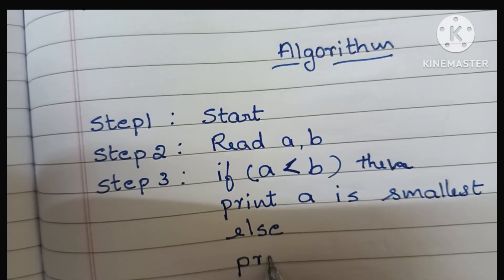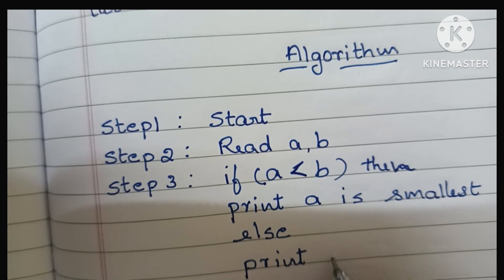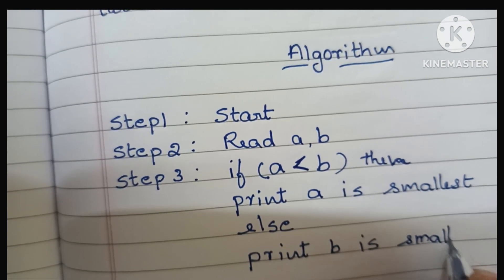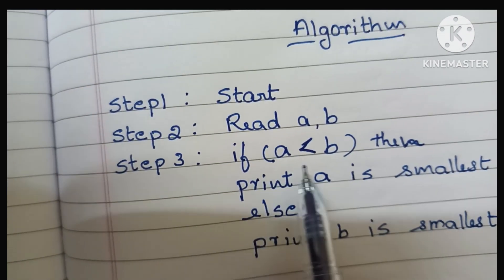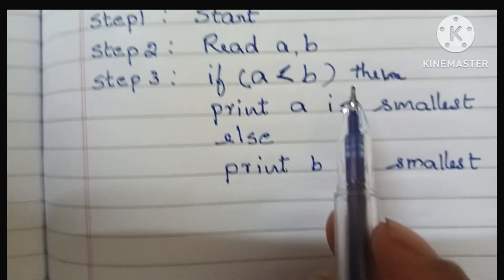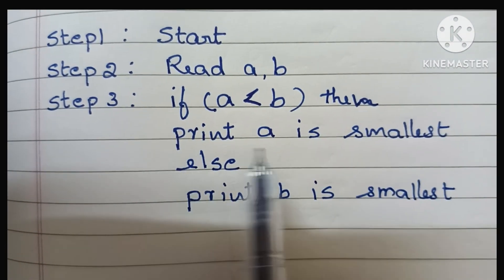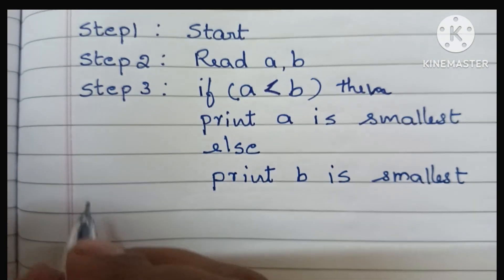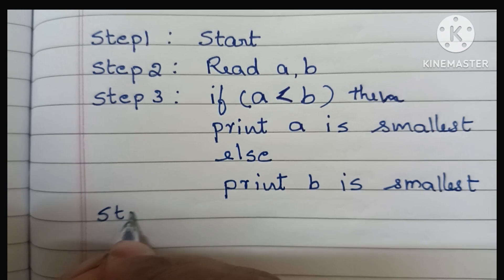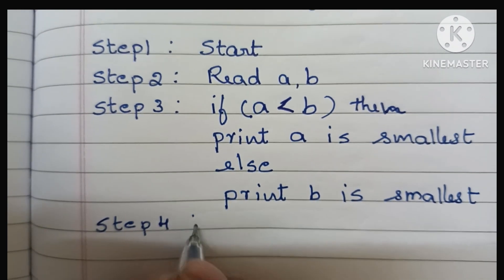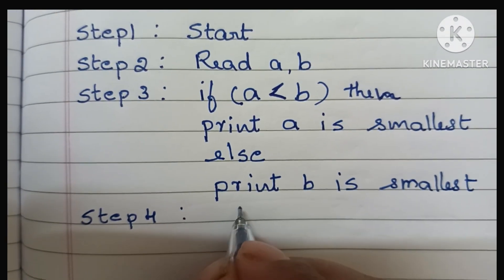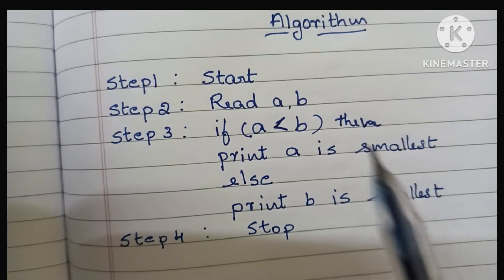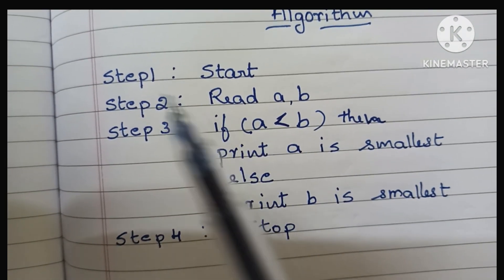Else condition: if this condition is false, we have to print 'b is smallest'. So if a is less than b and this condition is true, print 'a is smallest'; else print 'b is smallest'. In step 4, we have to stop the algorithm using the stop statement.